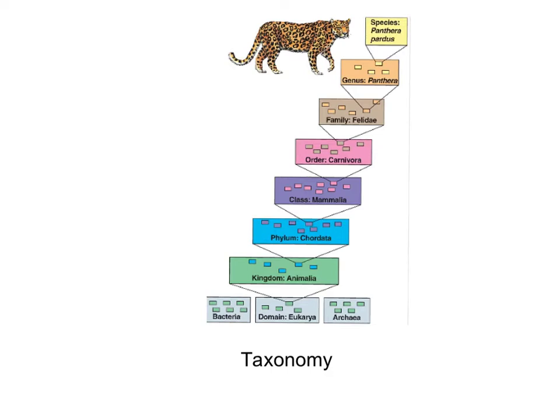Domain is our broadest category, with three domains: Eukarya, Bacteria, and Archaea. In the Eukarya domain, we have kingdoms: animal, plant, and fungus. Protists are a little iffy since they're starting to dissolve that kingdom.